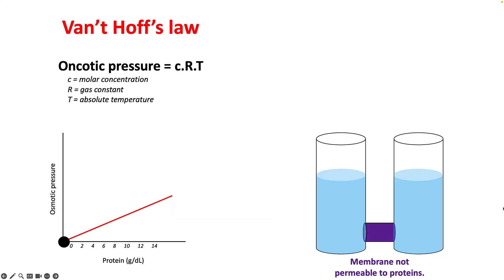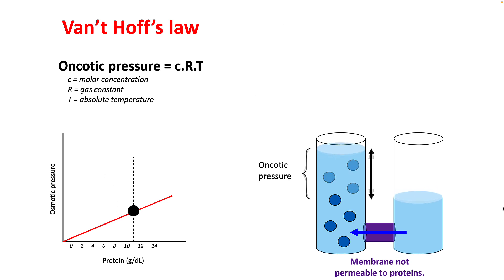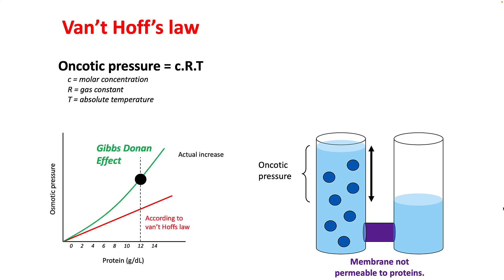Before we proceed, let's understand Wendt-Soft law. Wendt-Soft law simply states that your oncotic pressure will be directly proportional to your molar concentration. Oncotic pressure is nothing but the osmotic pressure generated by your proteins, and its concept is exactly the same as osmotic pressure. So higher the number of moles in your given solution, the higher the oncotic pressure. However, when you measure the oncotic pressure it is much higher than what would be expected from Wendt-Soft law, and this is because of the Gibbs-Donnell effect.